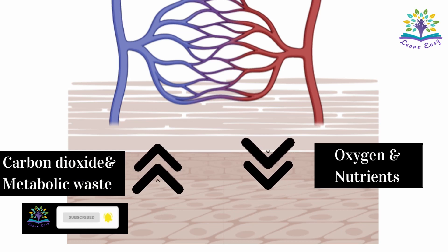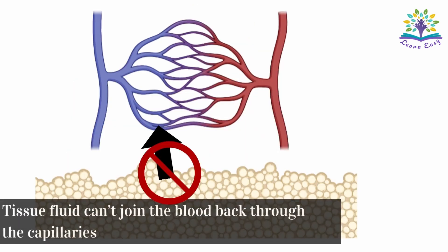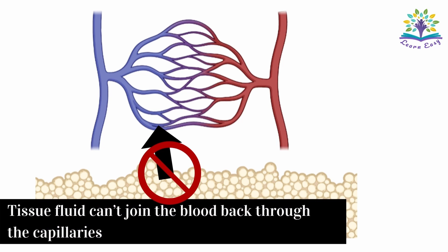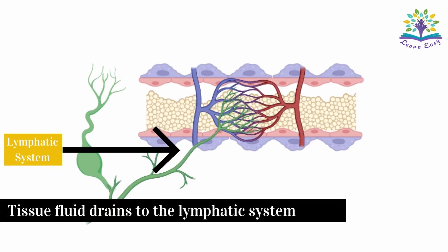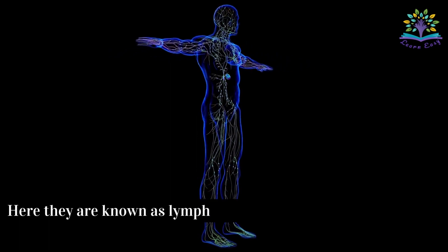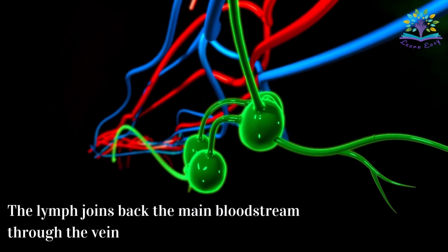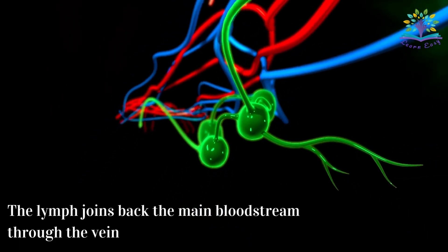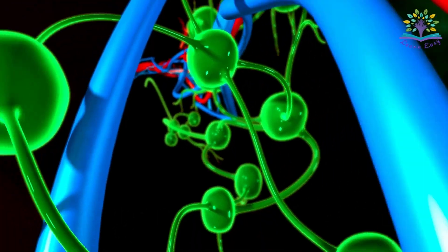But tissue fluid can't join the blood back through the capillaries, so they drain into another system of vessels called the lymphatic system. The fluid is called lymph here. The lymph joins back the main bloodstream through the vein which is connected to the lymphatic vessels.